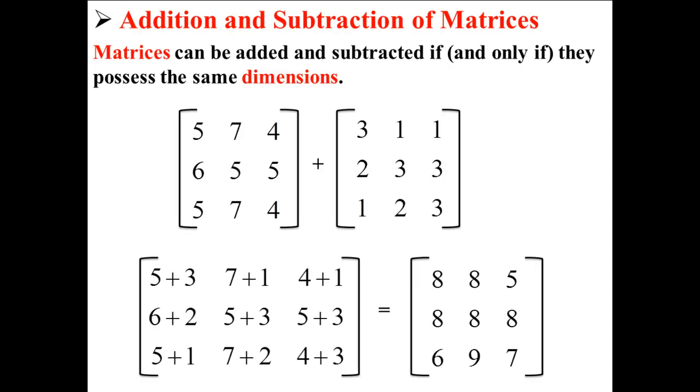Here, we have added our two matrices to form a new matrix. We have done this by adding corresponding elements. For example, in the top left of matrix A, we have 5, and in the top left of matrix B, we have 3. So, on our new matrix, the top left is 5 plus 3, or simply 8.